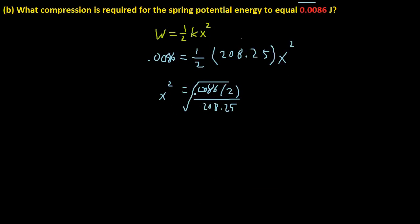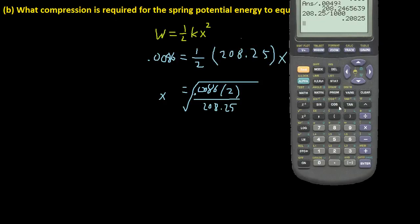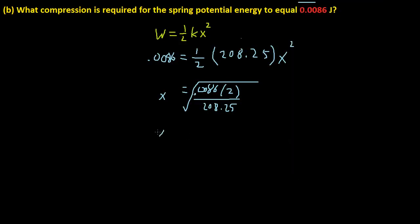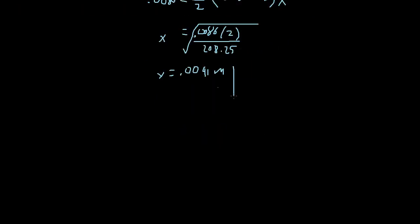Let's calculate that. So the square root of 0.0086 times 2 over 208.25 is equal to 0.0091. So x, our distance, is equal to 0.0091 meters. And I believe the question is asking it for centimeters. So we just have to convert this into centimeters.